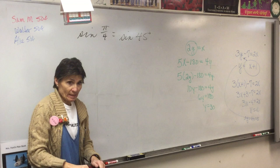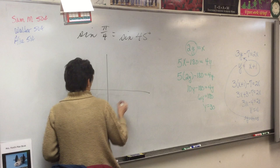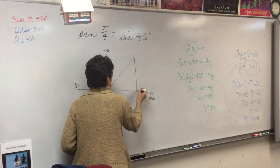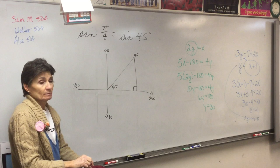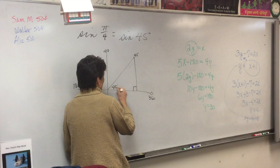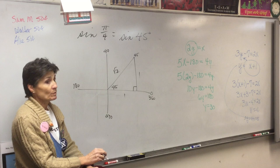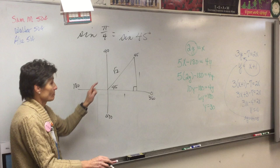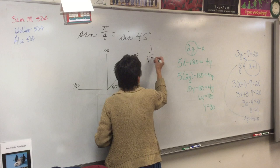180 divided by four. We draw a picture, and we want 45 degrees, so that would be right here in quadrant one. We know that the sides of a 45-45-90 are 1, 1, root 2. Since we're in quadrant one, we don't have to worry about anything being negative. We want the sine, and sine is opposite over hypotenuse, so your answer would be 1 over root 2.